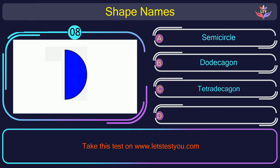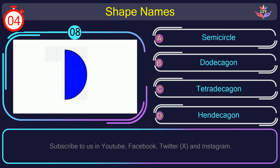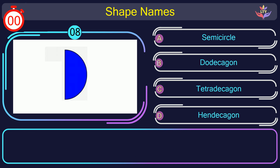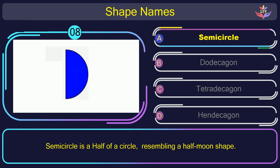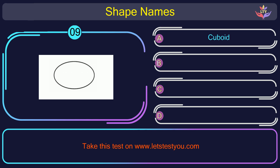Question number 8. Guess the name of the shape in this picture. The correct answer is option A. Semi-circle. Semi-circle is a half of a circle resembling a half-moon shape.